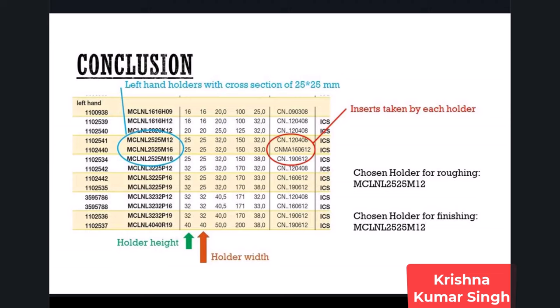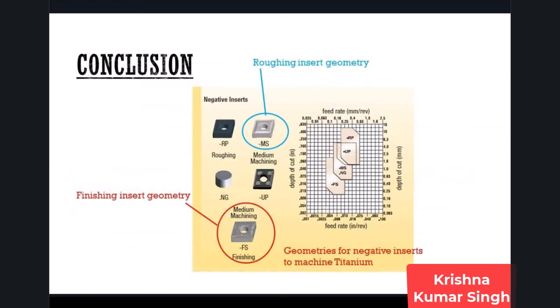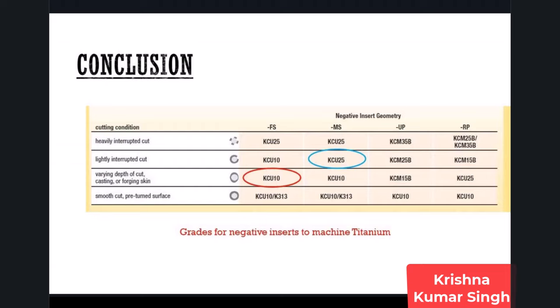For inserts, first you have to select the geometry or chip breaker. For roughing, we don't have a large depth of cut because we have the stock block and final product dimensions close together. For roughing, I will choose MS geometry, which is medium machining geometry. For finishing, I will choose FS geometry. Now you have to select insert grade. From the Kennametal catalog, the recommended grade for titanium roughing is KCU-25 and for finishing KCU-10.